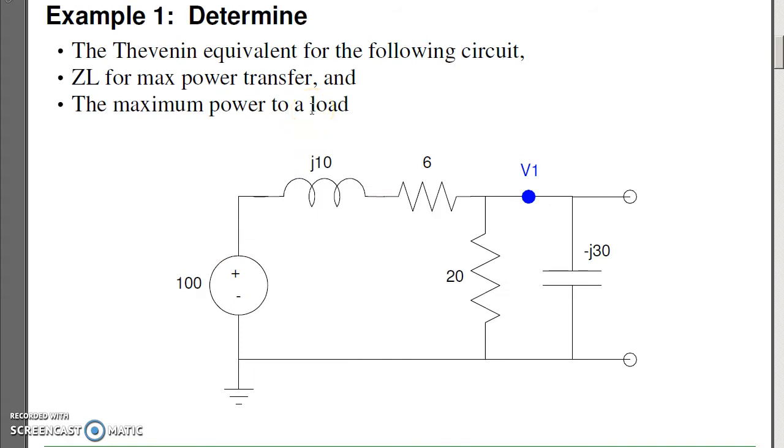If I have a circuit like this, I want to find the Thevenin equivalent, same thing we did before. When I look in, I'll see a Thevenin voltage and a Thevenin impedance, except that now I'm going to get complex numbers. What we want to look at is find the Thevenin equivalent for a circuit, find the resistance for the max power transfer, and the maximum power to the load. Same thing we did at DC.